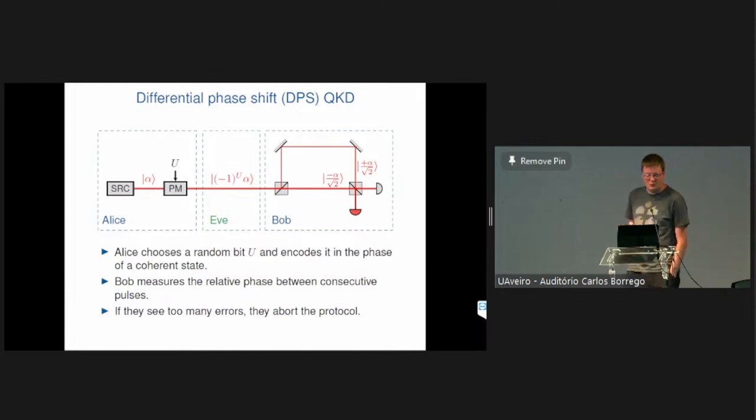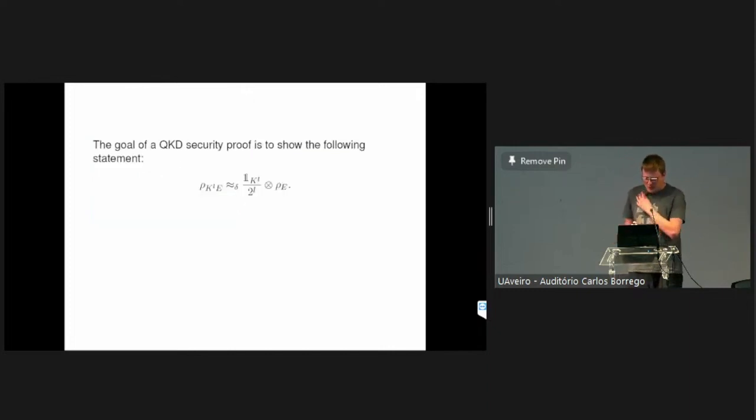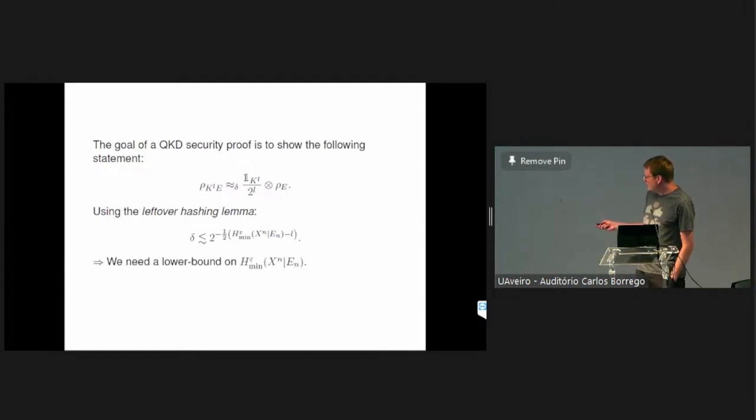And as in pretty much any QKD protocol, if there are too many errors during the execution, they abort because they conclude that Eve was present and tried to get information about the raw key bit. And so to more formally state what is the goal of a security proof, it's to show a statement of this form. So here K_L is Alice's key bit after any sort of privacy amplification, post-processing, whatever they want to do. And E here is Eve's side information at the end of the protocol and should be close to product. And so as commonly done with the leftover hashing lemma, we know that this can be well approximated in these two states, given that we have a lower bound on the smooth min-entropy.